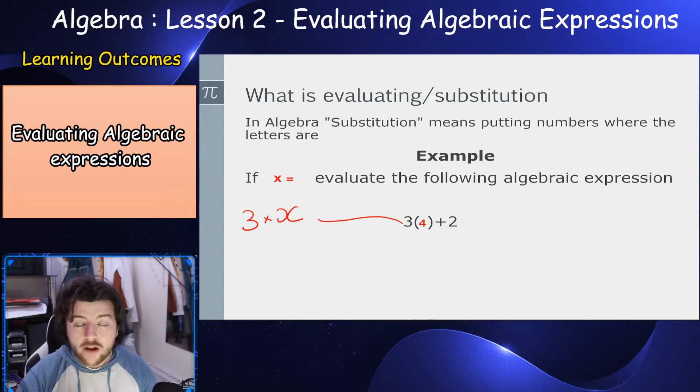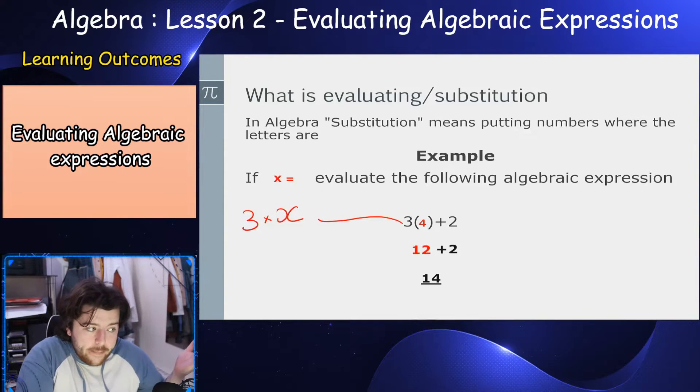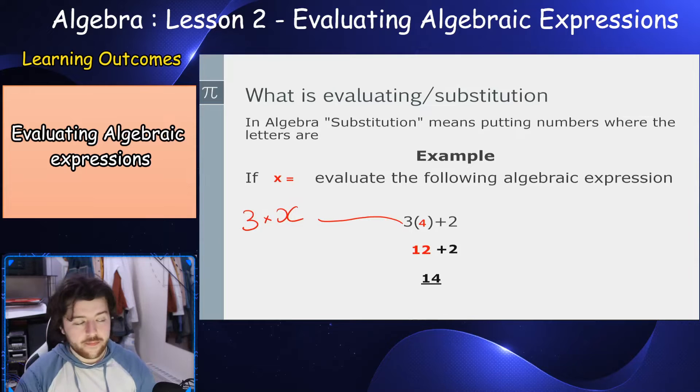So we know 3 bracket 4, that's the same as 3 times 4. 3 times 4 is 12. Add on the 2 there, 12 plus 2. 14. Bada boom, bada bing. That's simple. That's all we need to do. We just take the value of x, the actual numerical value that's given in the question, and just shove it in.